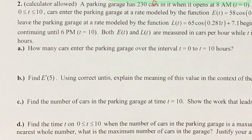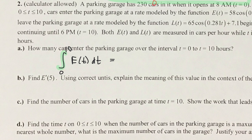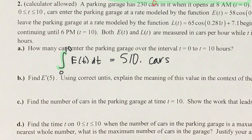For part a of the second problem, we take the integral from 0 to 10 of the entering cars function. This goes straight into your calculator — menu, four, three on the TI-Nspire CX CAS system — and we get about 510 cars, because you can't have half a car.